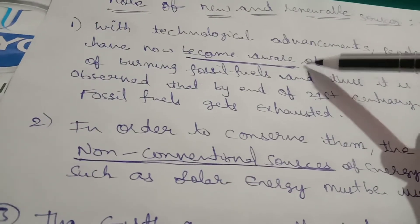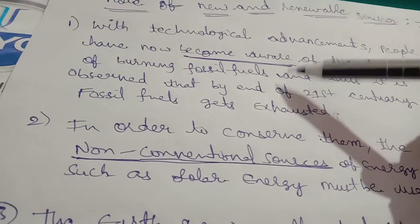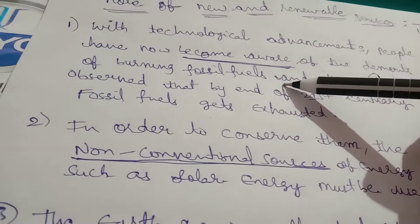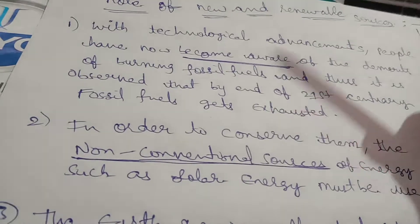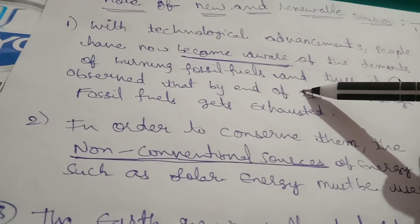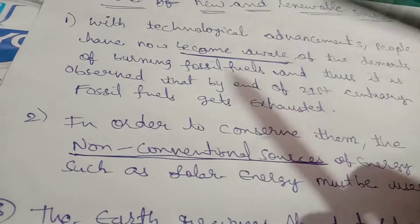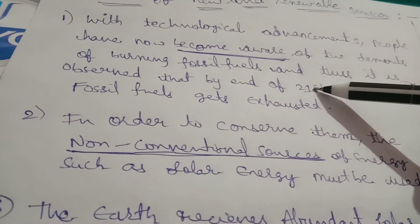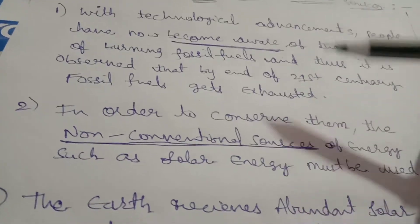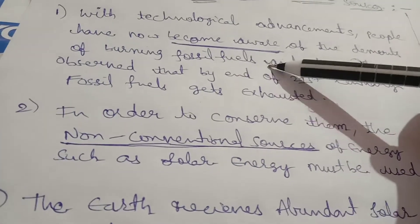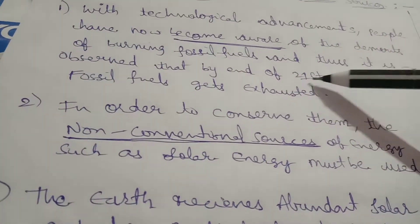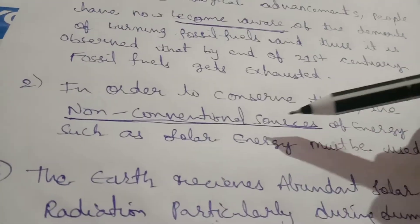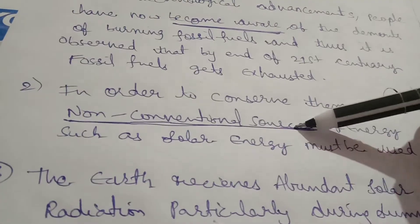The first point is that people are aware of the problems with fossil fuels. If we continue to use fossil fuels, they can be completely exhausted by the end of the 21st century. Therefore, we should use non-conventional sources of energy.